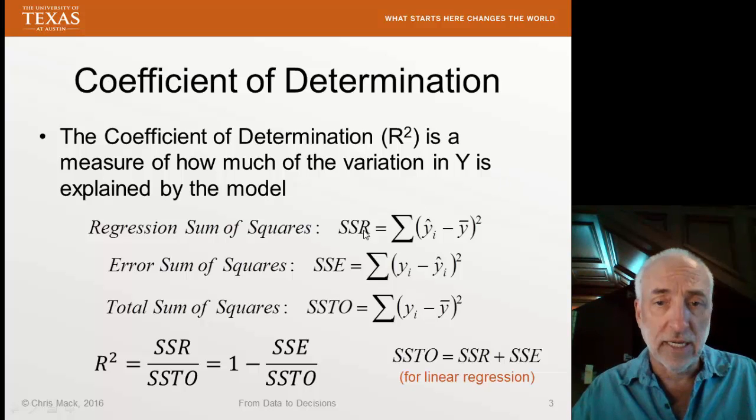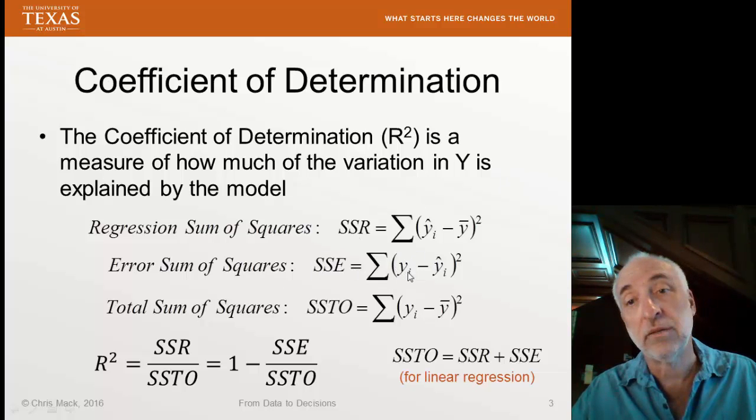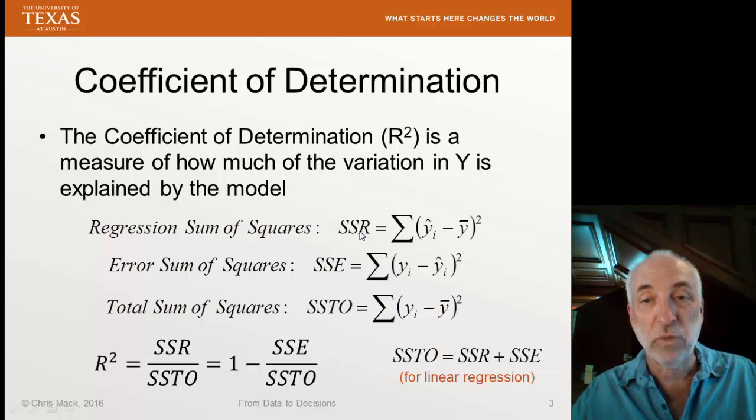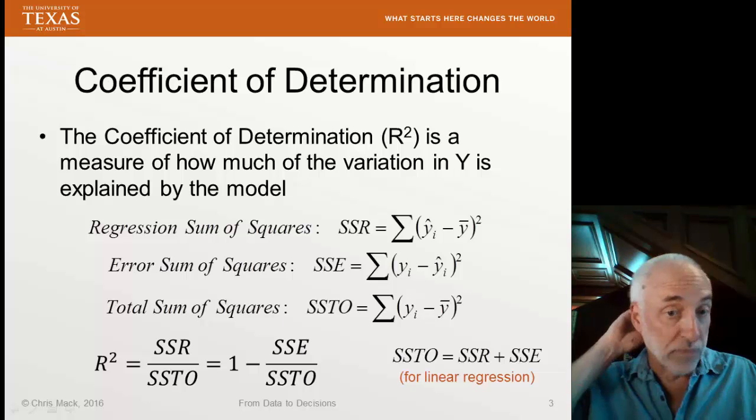Recall that we've defined the sum of the squares of the errors, the difference between the data and the model itself. That's the sum of the residual squared, sometimes called the residual sum of squares. Unfortunately, that sometimes gets confused with the regression sum of squares, which is a different sum. And the total sum of squares on the bottom is a function of the data only. It's not a function of the model at all.